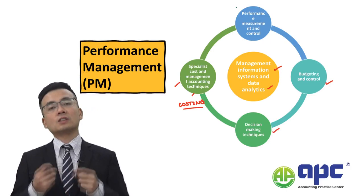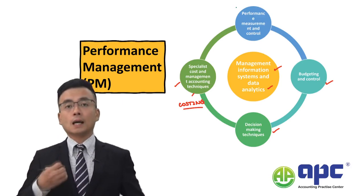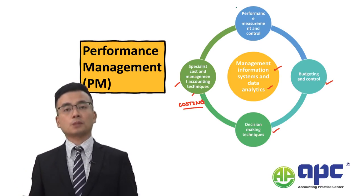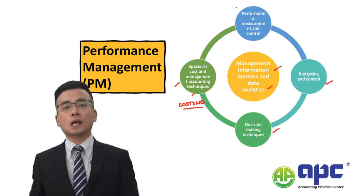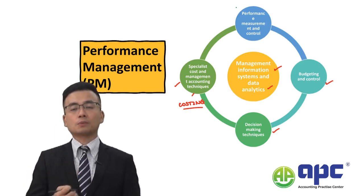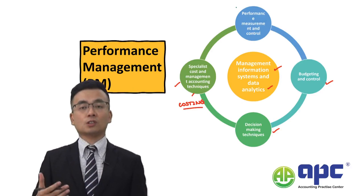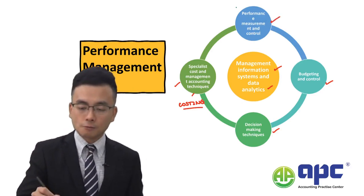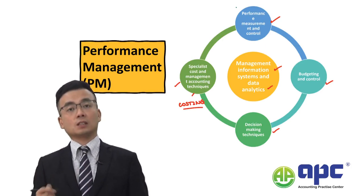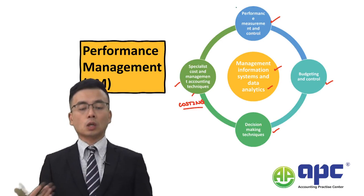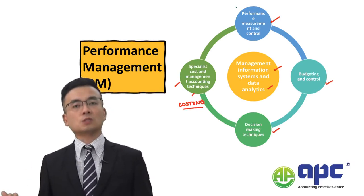We also need to apply these techniques into the decision making section. The application of relevant costing principles in the PM paper will be a lot more difficult than in ACCA MA or F2 studies, so make sure to thoroughly learn relevant costing. Finally, one Section C question will come from performance measurement and control — for example, transfer pricing, balanced scorecard, and the building blocks model, where you assess investment centre or subsidiary performance within a group.